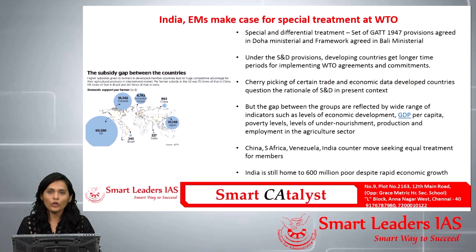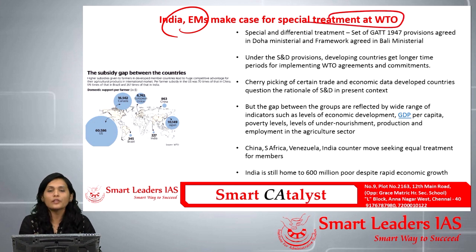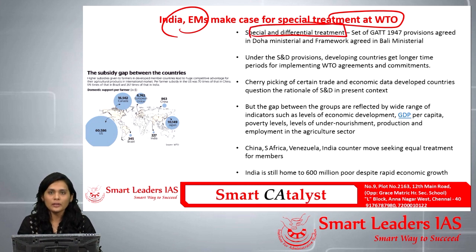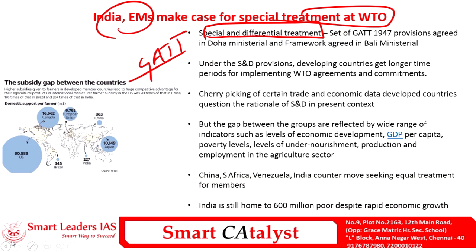The fourth article is about India and emerging markets making a case for special treatment in the World Trade Organization. It deals with the provision of Special and Differential Treatment that emerging markets and India claim under the GATT agreement. This treatment was first agreed upon at the Doha Ministerial Summit of the WTO and later implemented from the Bali Ministerial Summit.